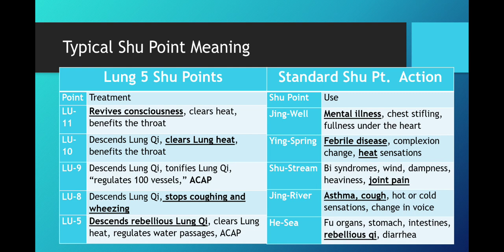Then Lung 5 descends rebellious lung qi, clears lung heat, regulates water passages, and activates the channel to alleviate pain. This corresponds to the He Sea point's indications of fu organs, stomach, intestines, rebellious qi, and diarrhea — coinciding with rebellious qi.